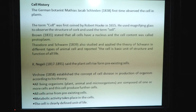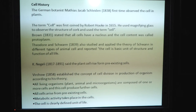K. Nageli, 1817 to 1891, said that plant cells rise from pre-existing cells. Virchow, 1858, established the concept of cell division in the production of organisms. According to this theory, all living organisms like plant, animal and microbes are composed of one or more cells, and these cells produce further cells. All cells rise from pre-existing cells. Metabolic activity takes place in cells. The cell is a clearly defined unit of life.